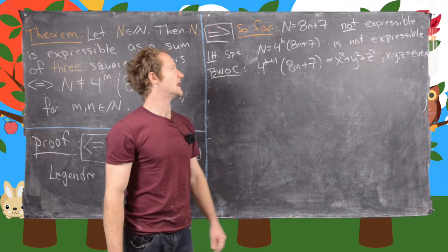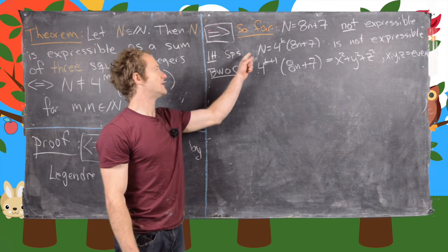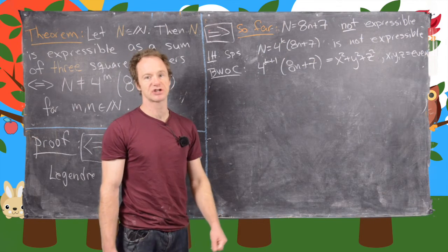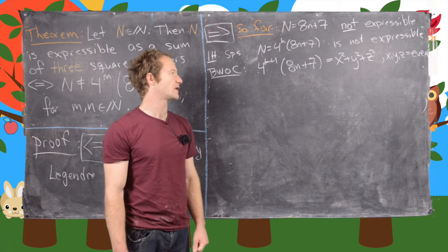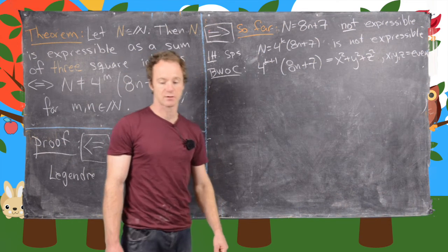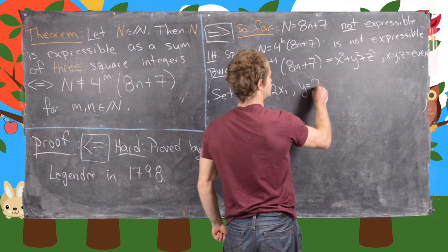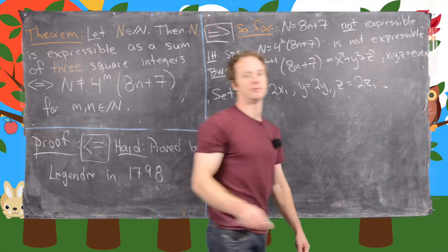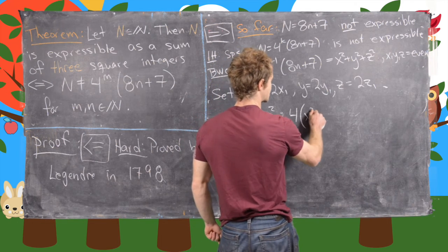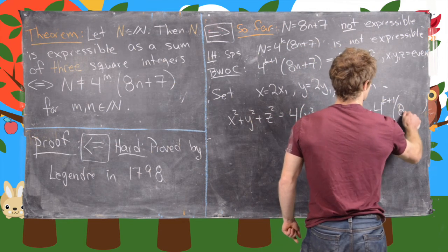So we have 4^(k+1) times (8n + 7) = x² + y² + z², and we've shown all of x, y, z are even. So we set x = 2x₁, y = 2y₁, z = 2z₁. This turns x² + y² + z² into 4(x₁² + y₁² + z₁²), which equals 4^(k+1) times (8n + 7). Dividing both sides by 4 gives x₁² + y₁² + z₁² = 4^k times (8n + 7).